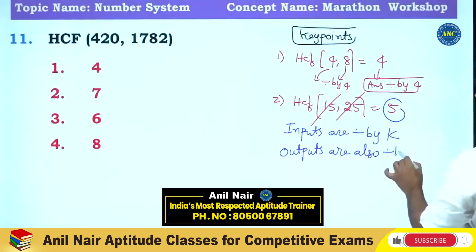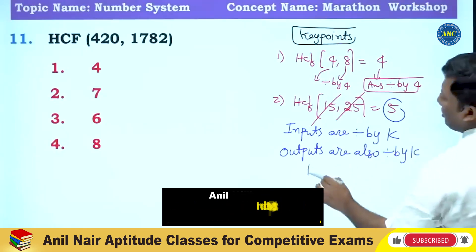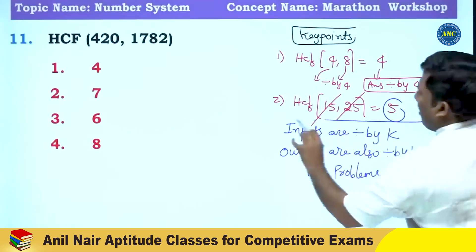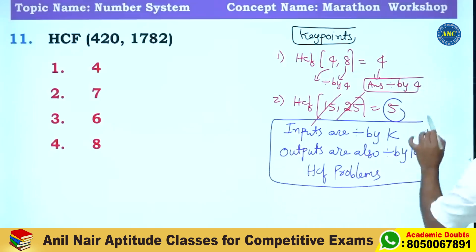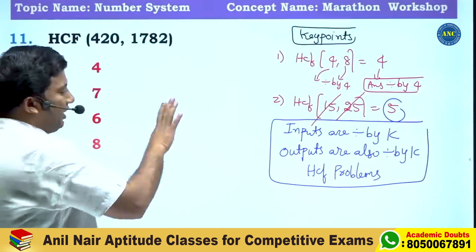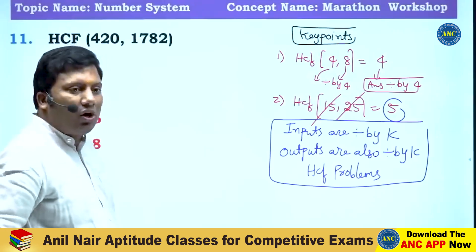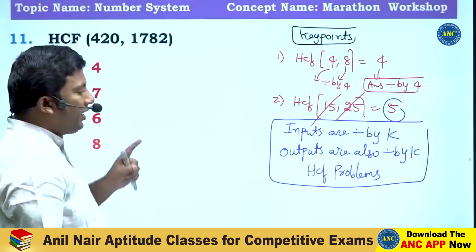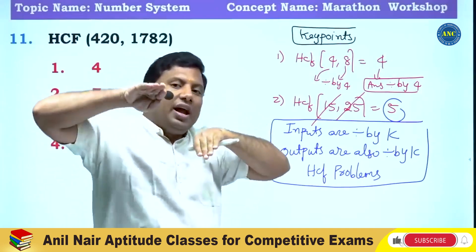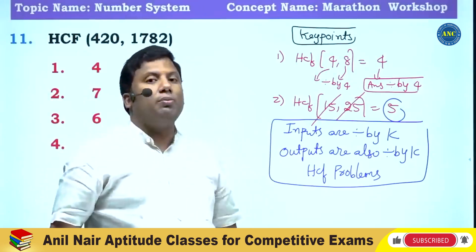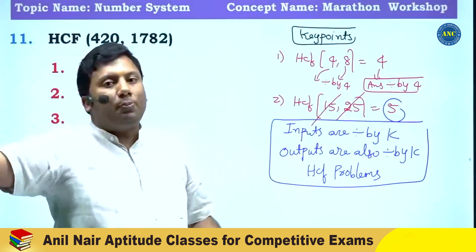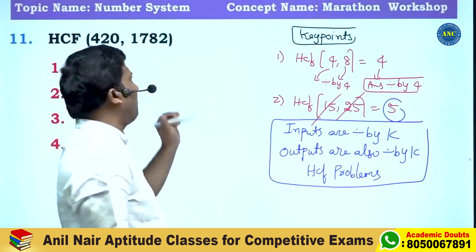In HCF problems — very interesting concept. In the next 10–15 minutes, we will try to solve HCF by common sense. If the inputs are divisible by K, outputs are also divisible by K. For example, HCF of 6 and 9: 6 is divisible by 3, 9 is divisible by 3, so the answer should also be divisible by 3. All the inputs must be divisible by K for the output to be divisible by K.